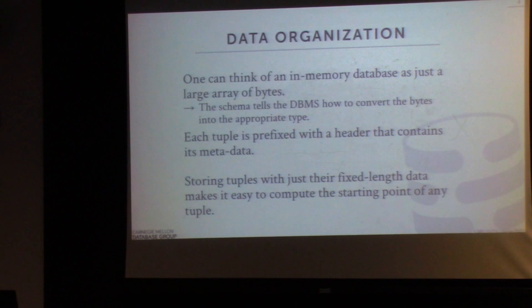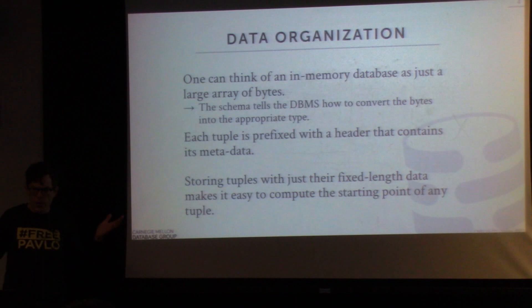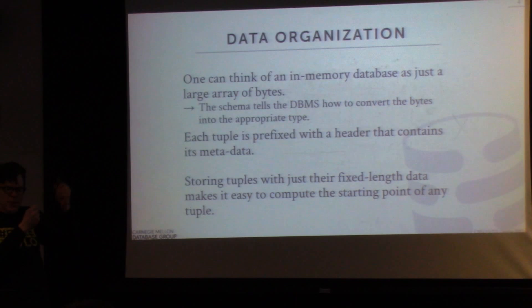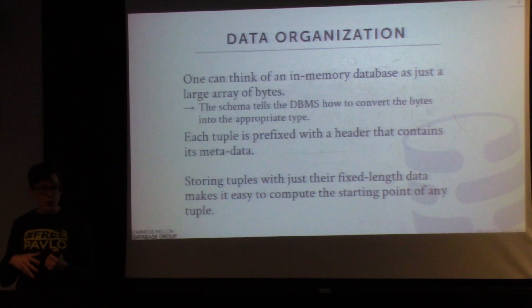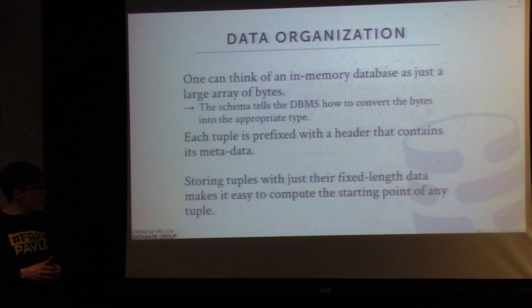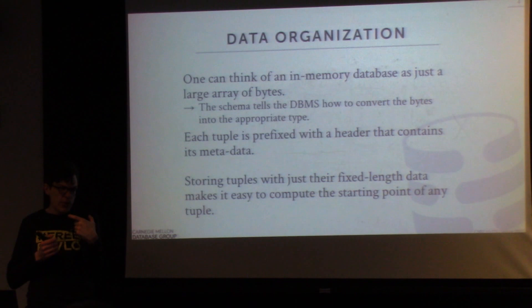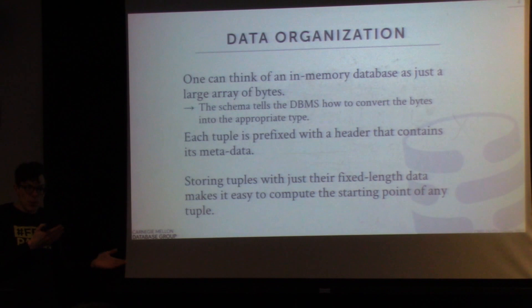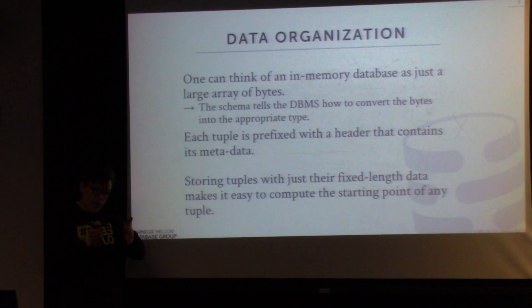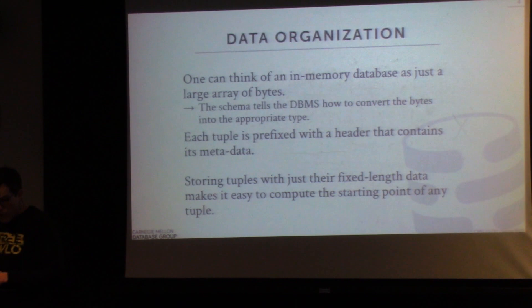You can think of an in-memory database as essentially a bunch of large blocks of arrays of bytes. We malloc large blocks and the database system uses the schema defined for the table to interpret the bytes within those arrays as whatever type we're looking at. For every single tuple in our block, we'll have a little extra space as a header prefix to store additional information — versioning info, next/previous pointer for MVCC — followed by the actual data.